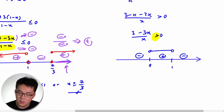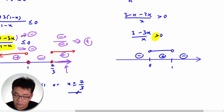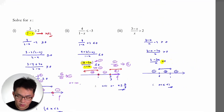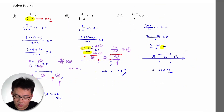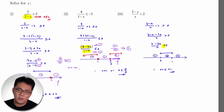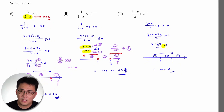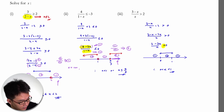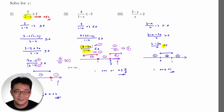Alternating signs, the middle region between 0 and 1 is positive. Since there is no equal sign and x cannot equal 0, the answer is 0 < x < 1. I hope you understand how to handle inequality questions using this method. If you have any questions or comments, drop me a text. Keep practicing — see you in the next video!